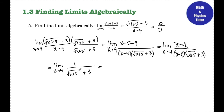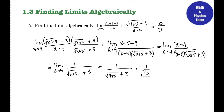Now that this has been simplified, I plug in 4 for x. In the denominator: √(4 + 5) + 3 = √9 + 3 = 3 + 3 = 6. So the answer to this question is 1/6.